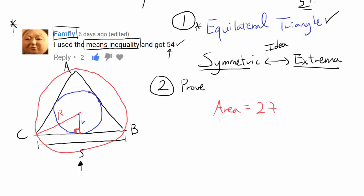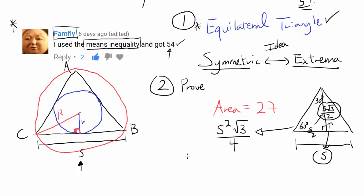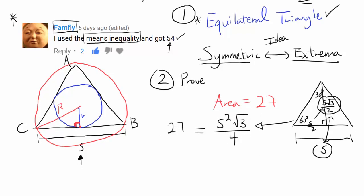For an equilateral triangle, the area is s² × √3 / 4. Let me prove that quickly: by dropping a perpendicular, you get a 30-60-90 triangle, so the half-base is s/2 and the height is s√3/2. Area equals base times height divided by 2, giving s²√3/4. We know this equals 27.